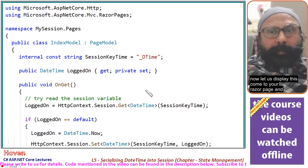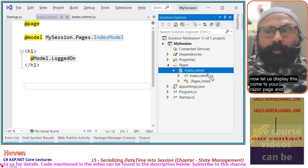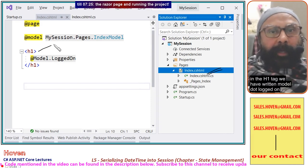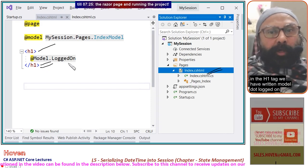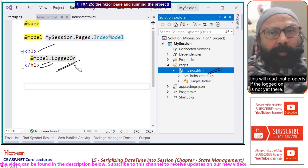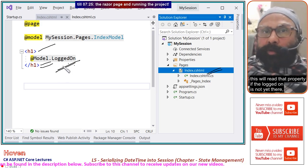Now let us display this. Come to your Razor page and in the h1 tag we have written Model.LoggedOn. This will read that property. If the LoggedOn is not yet there,